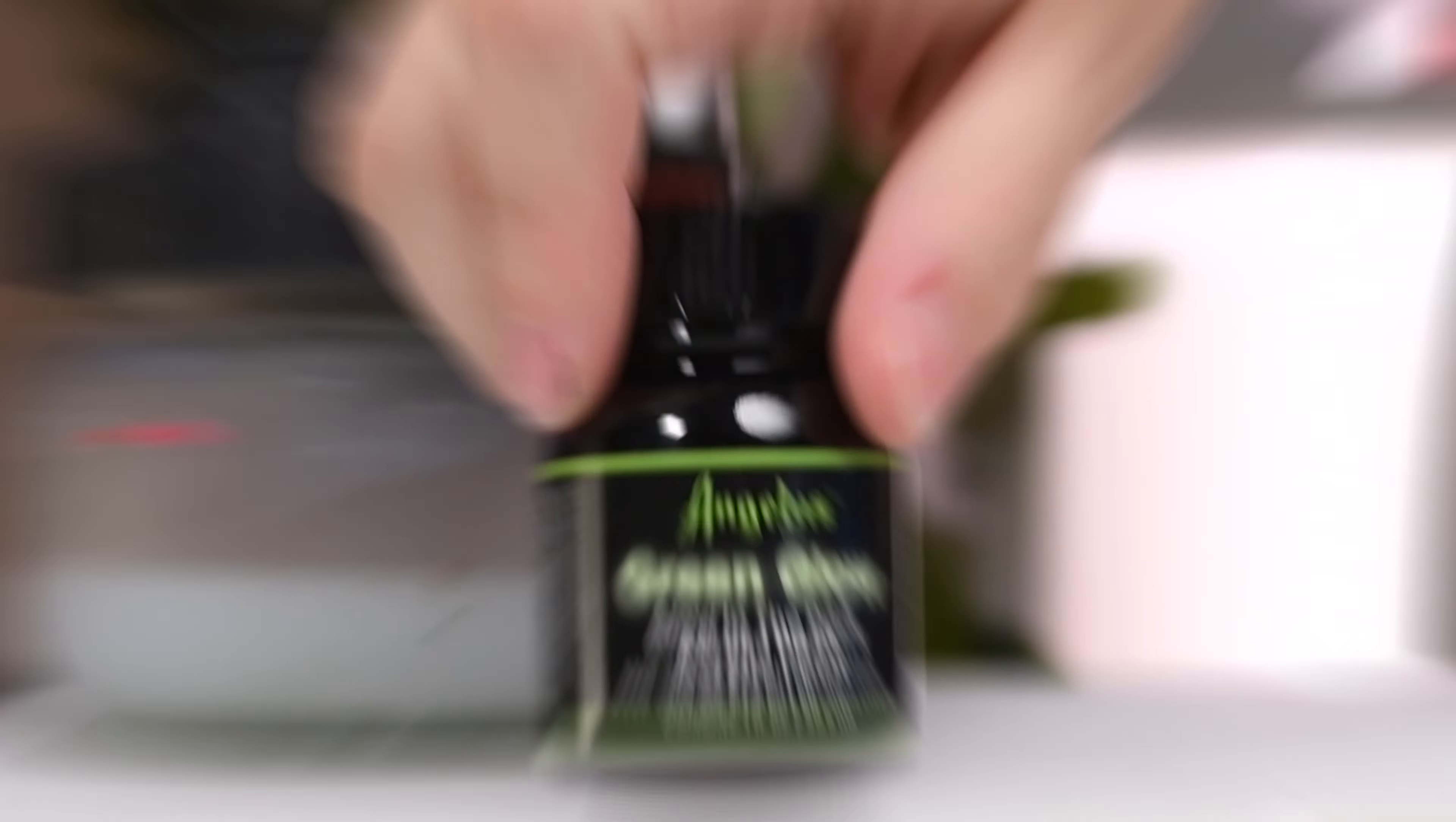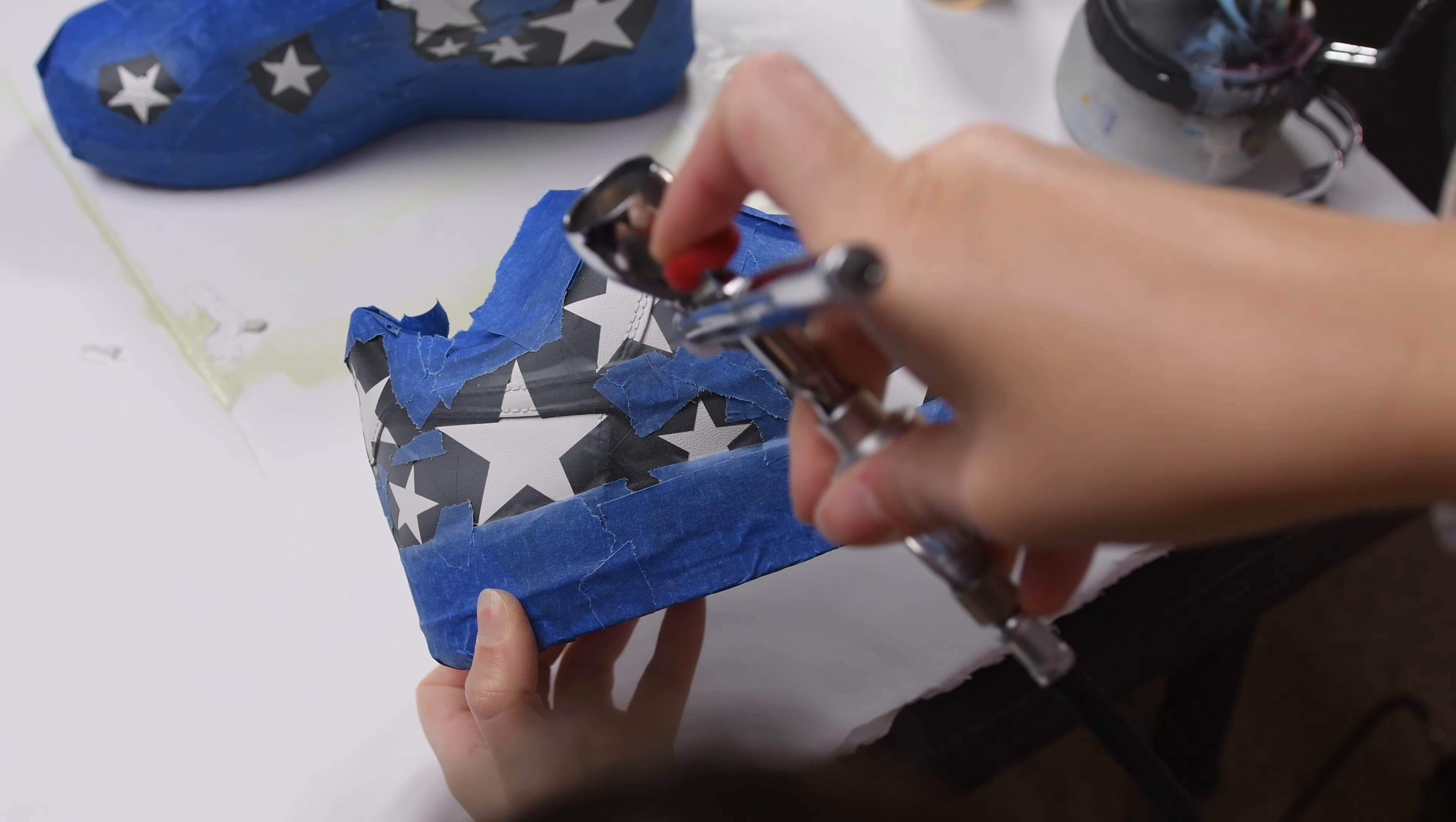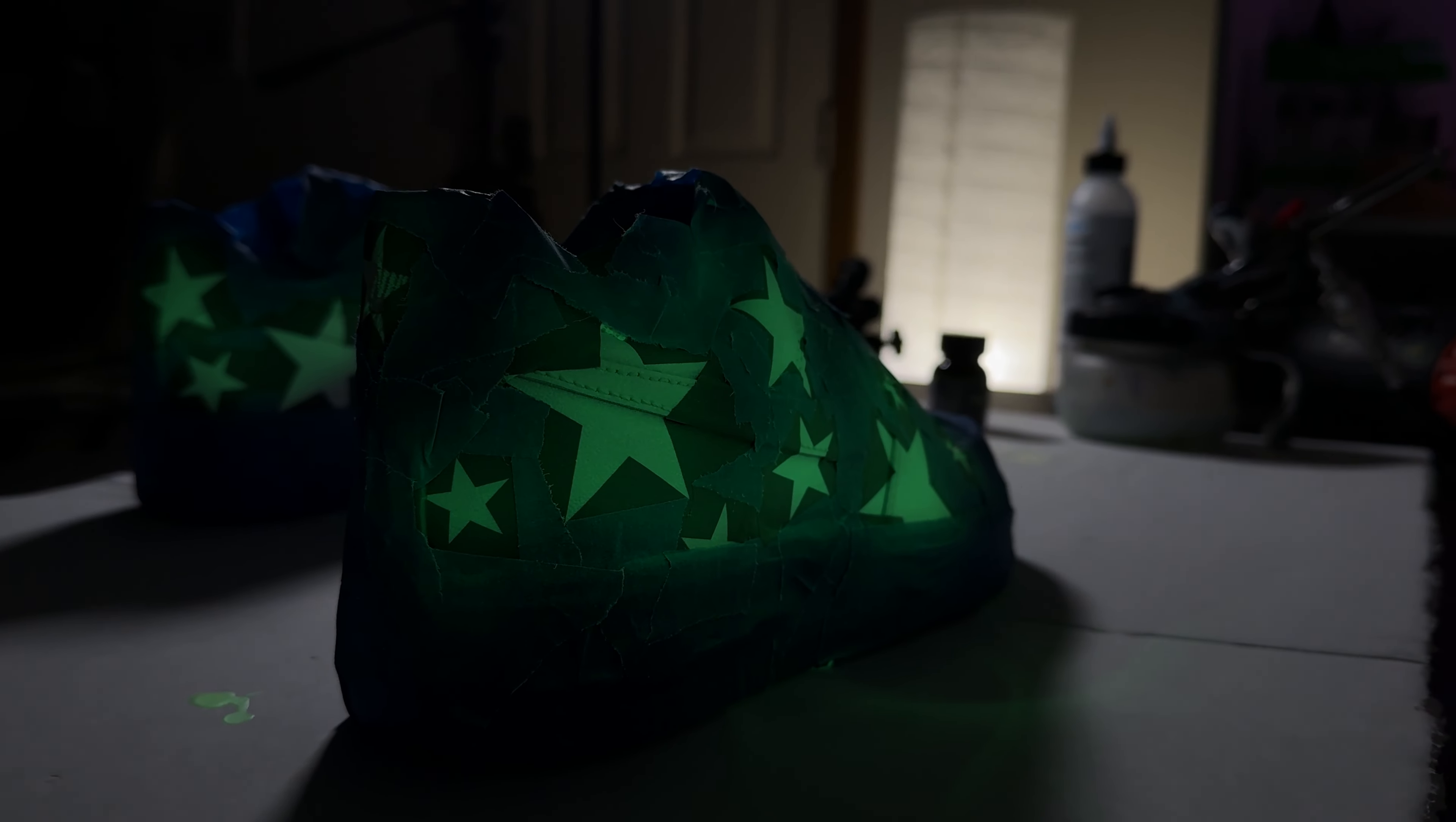I airbrushed six coats for each star, making sure to let each layer fully dry in between. Then, I airbrushed finisher over top the paint. While a finisher for this paint is optional, I personally want to protect my work as much as possible, so I'll be using Angelus' four coat in high gloss because that's what looked best to me to match the theme of my project.